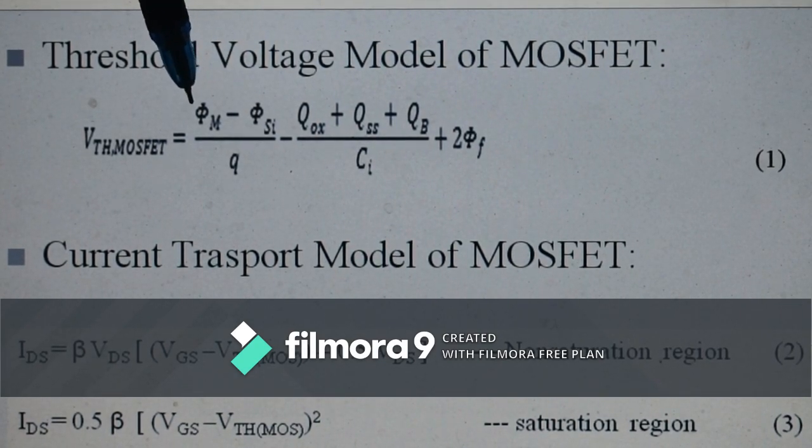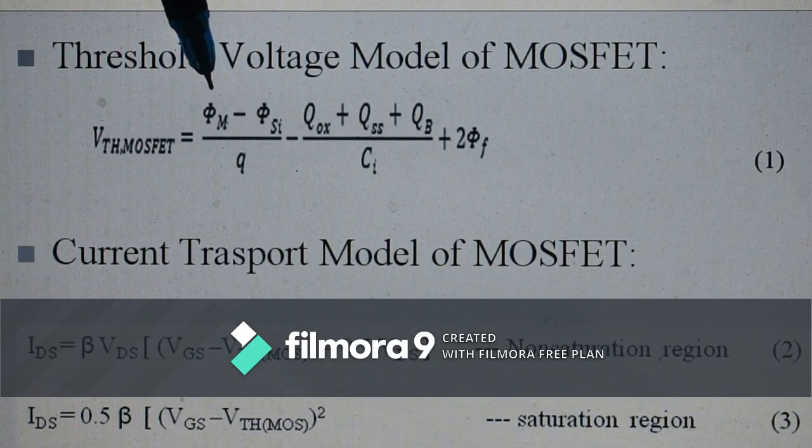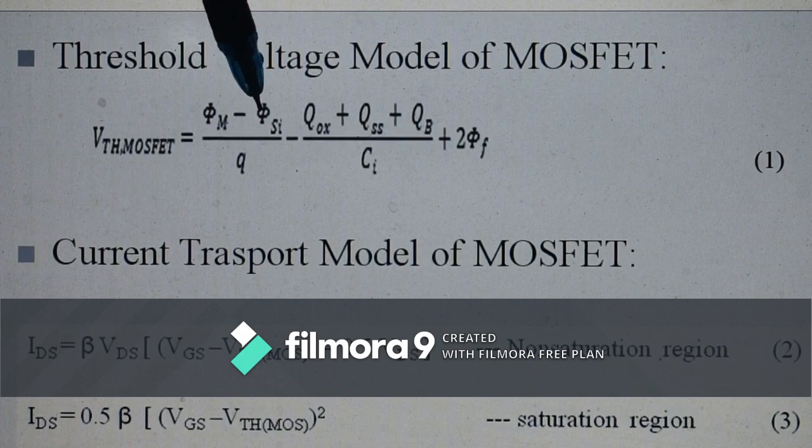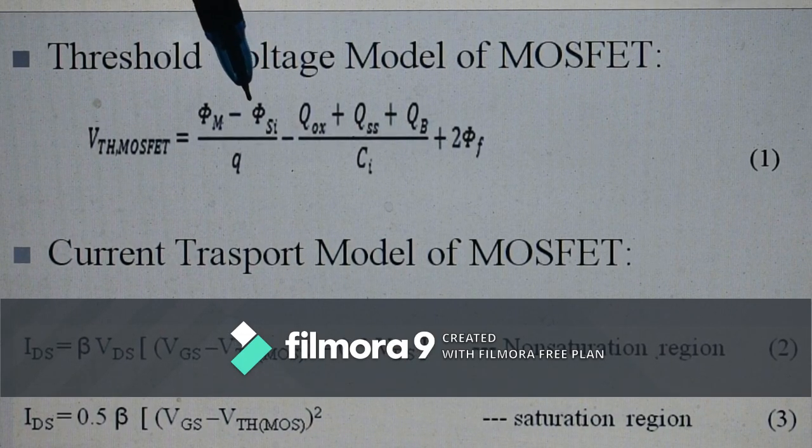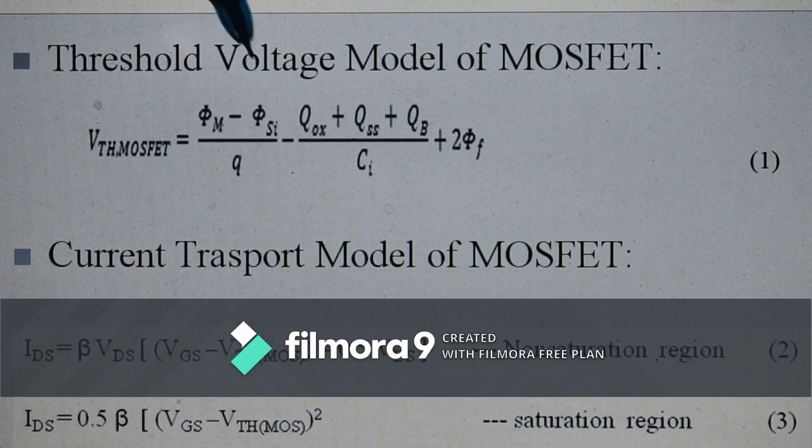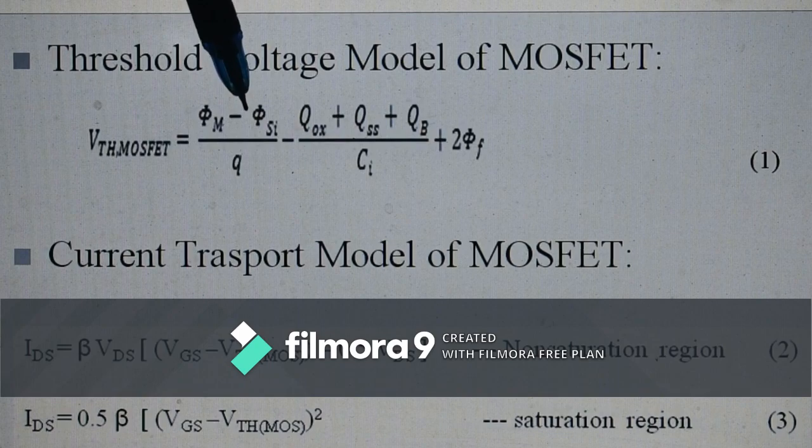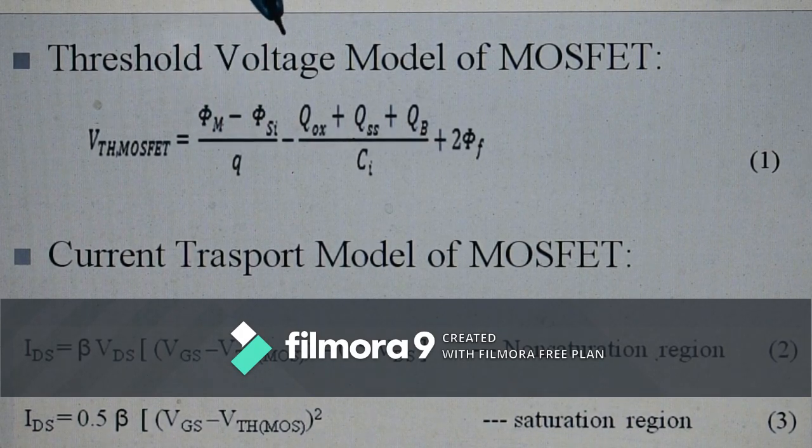Here, φM is the work function of metal expressed in electron volts. φSI is the work function of silicon substrate expressed in electron volts. That is how it is divided by q to get the term in voltage.